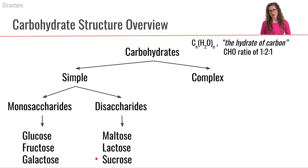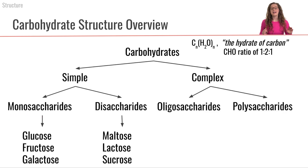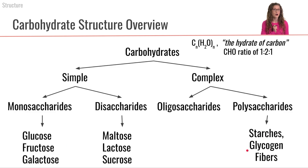Now let's take a look at the complex carbohydrates. Complex carbohydrates are going to be larger structures, larger than disaccharides. The first category are called the oligosaccharides, which are composed of somewhere between three to ten monosaccharide building blocks. And then we have our polysaccharides — poly meaning many — so polysaccharides are carbohydrates composed of more than ten monosaccharides all bound together. The kinds of polysaccharides we have are starches, glycogen — which is the storage form of carbohydrate in the human body — and fibers.